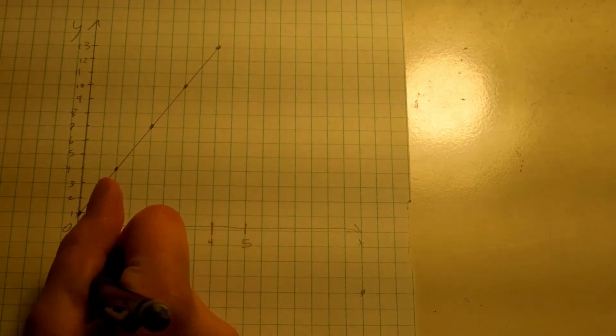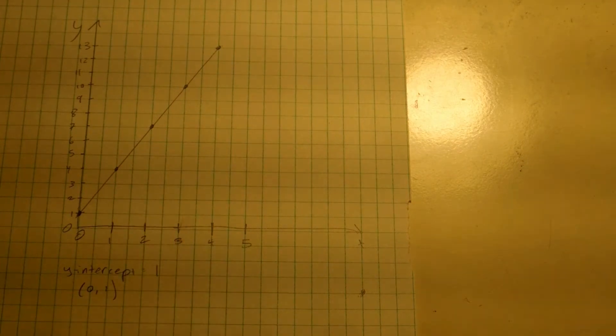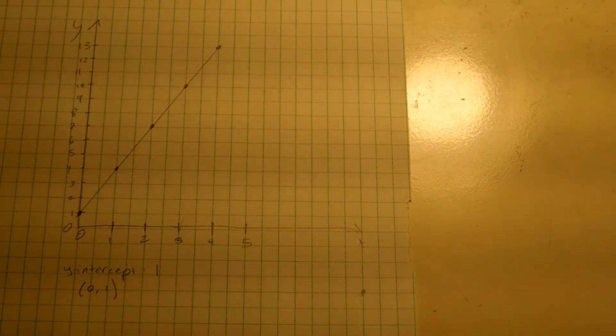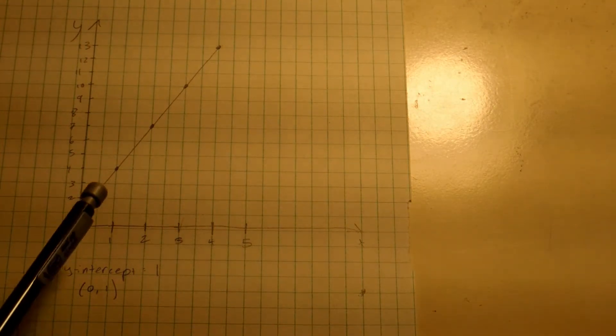So our y-intercept is 1. We can also write this as 0 comma 1. Slope is a little trickier. Remember, slope is the change in y divided by the change in x. To find slope on a graph, you have to pick two points on the diagonal line.